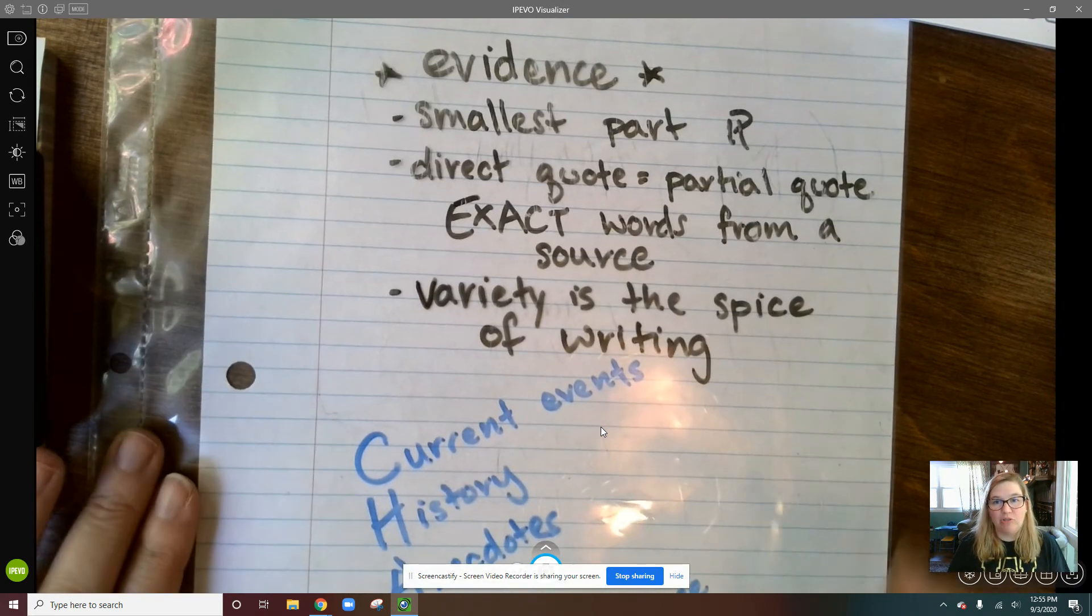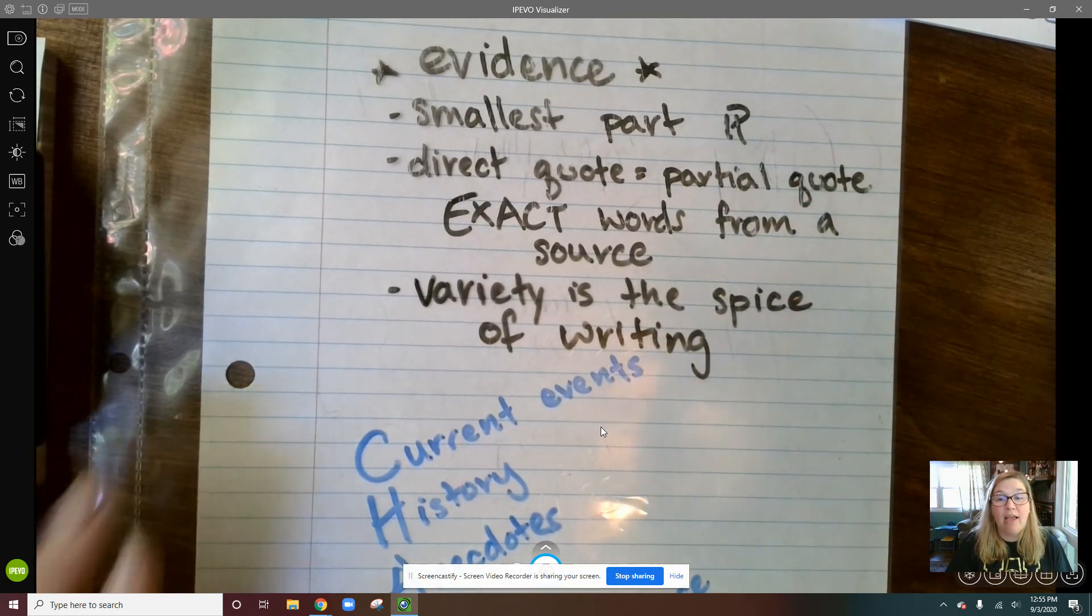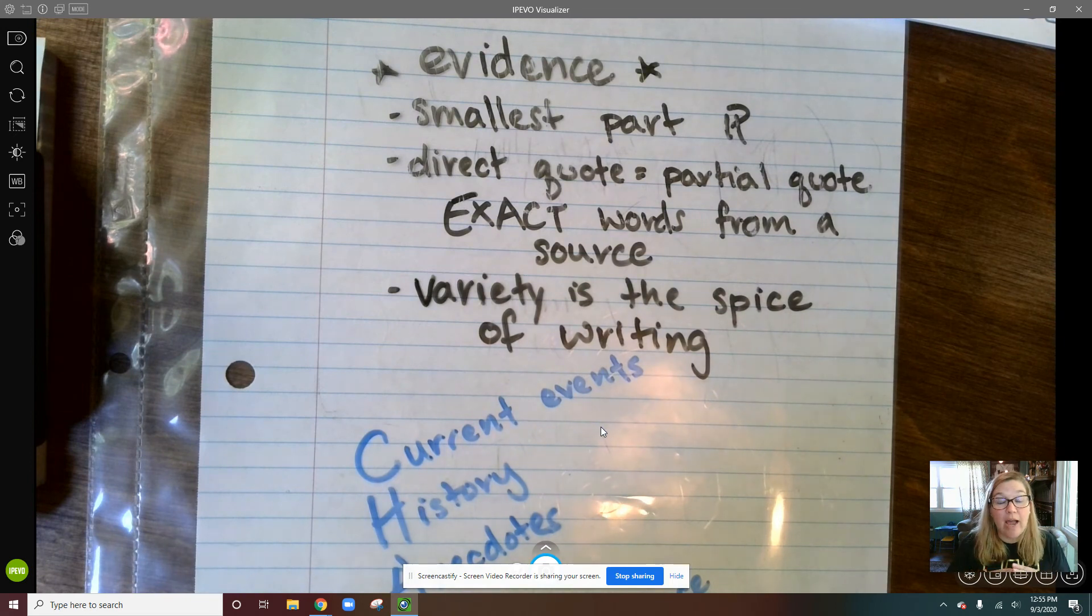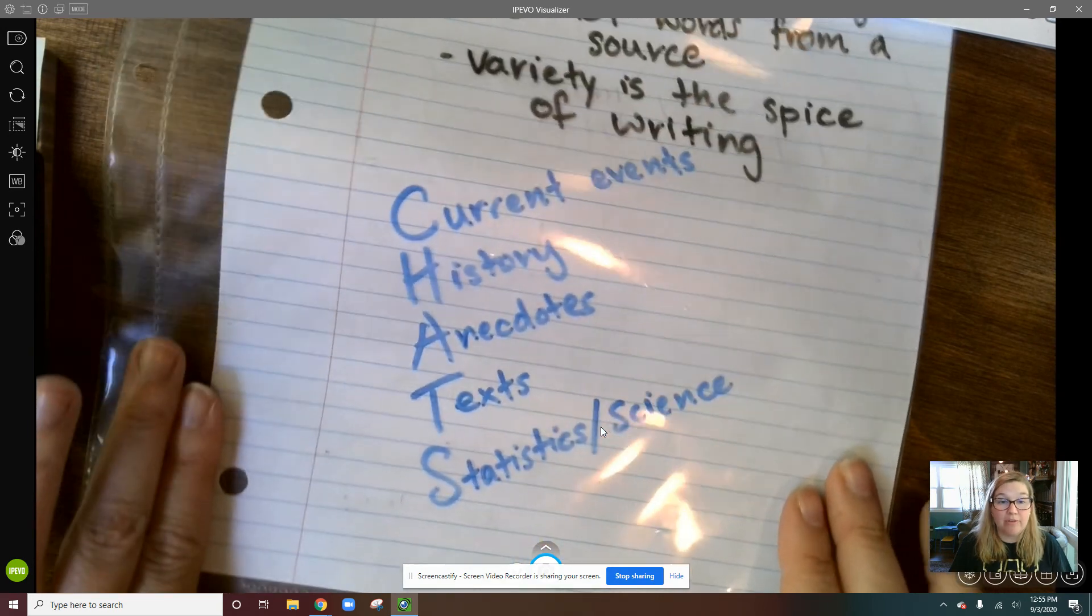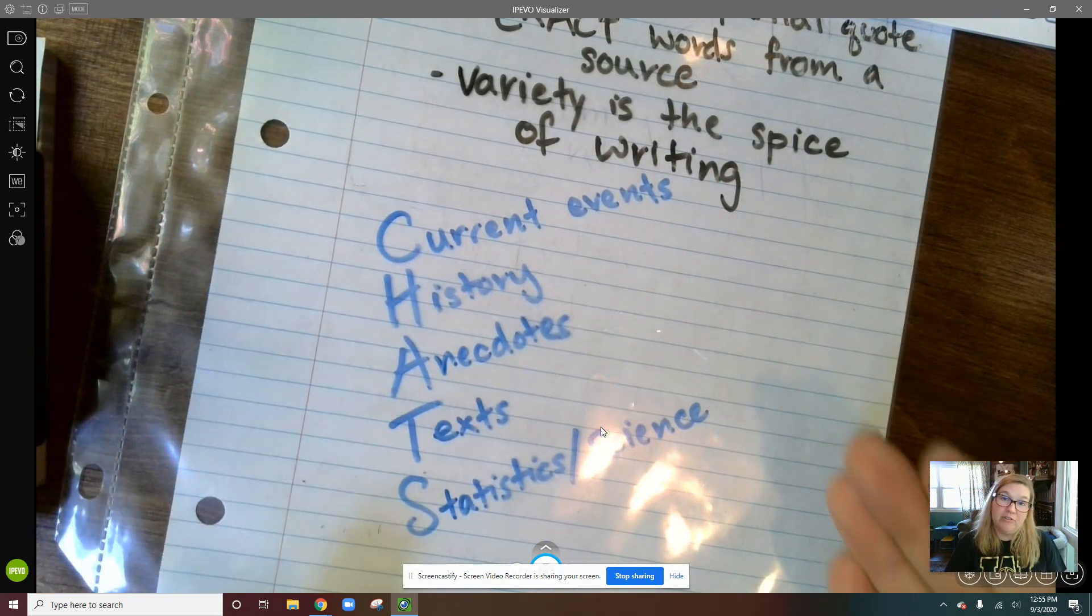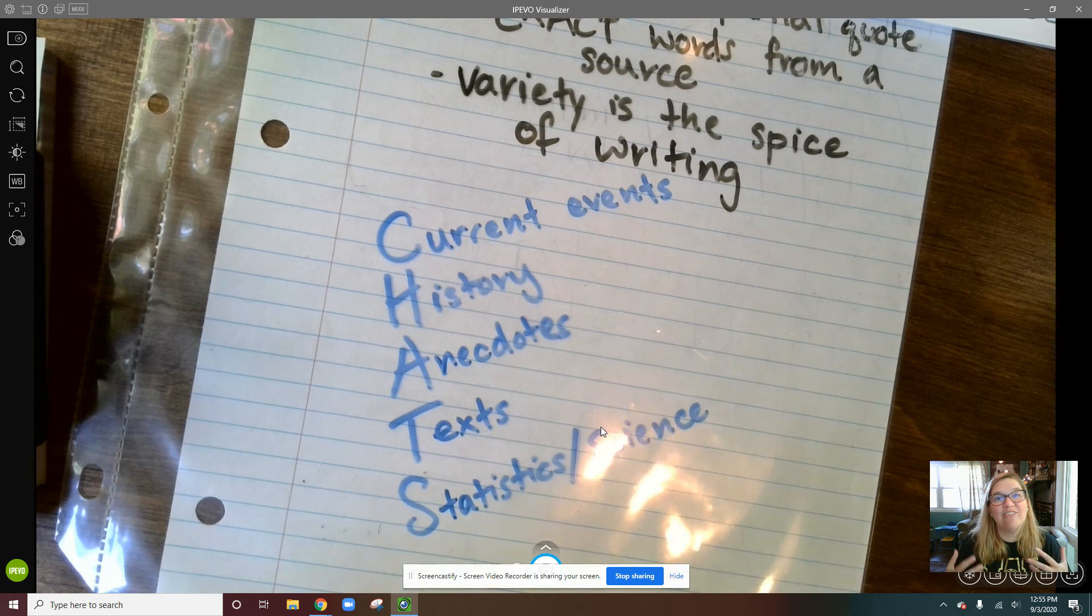So all of our evidence should be the smallest part of our paragraph. If it's a direct quote using the exact words from a source, then it should be partial, not a full sentence. And then variety is the spice of writing, so we need to remember that all of our evidence should have chats with whatever we are giving in our point and our explanation.